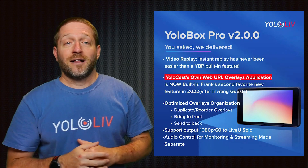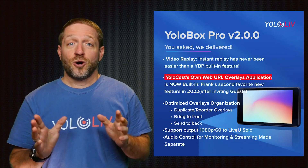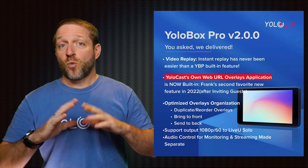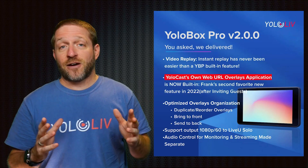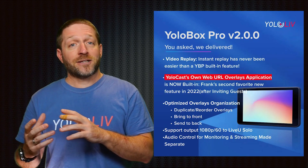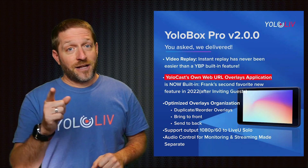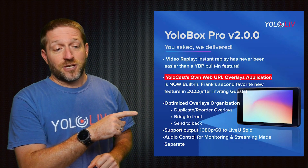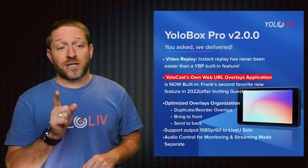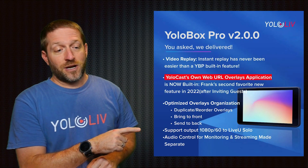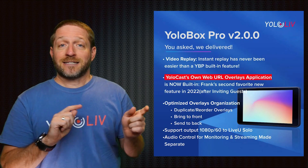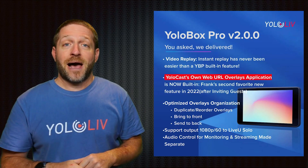Next up, URL overlays from YoloCast. If you are a YoloCast subscriber, this allows you to have a wider selection of titles and graphics that you can pull from the website and also make updates to them from the website — that's a really cool feature. Next, there are some optimized overlays and arrangement capabilities. Also, support for 1080p60 to the Live View Solo, and audio control separate from your program app.